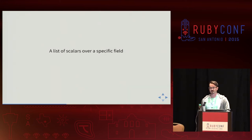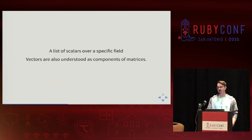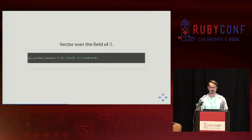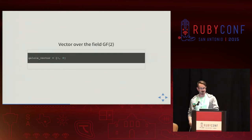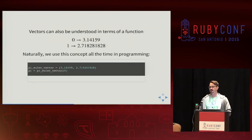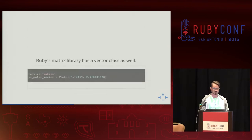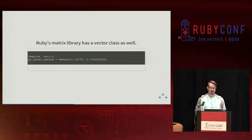Since we know what a field is, we can define a vector: a list of scalars over a specific field. Vectors are also understood as components of matrices. In Ruby terms, a vector over the field of real numbers is just an array. Here's a vector over Galois field two. Vectors can also be understood in terms of a function — you can refer to things by their index. Ruby's matrix library has a Vector class as well, so if you need to do more intensive computation on vectors, you can use that.